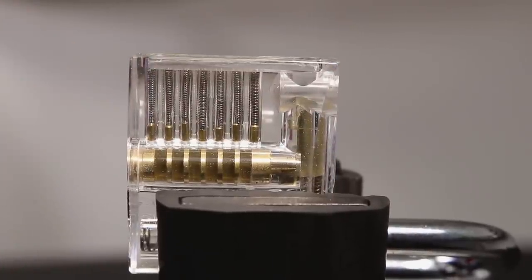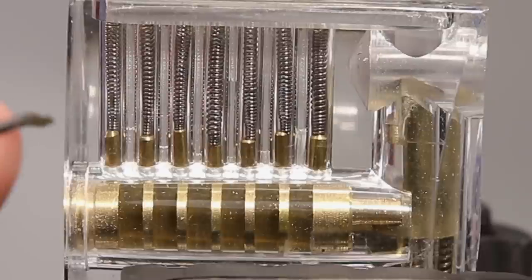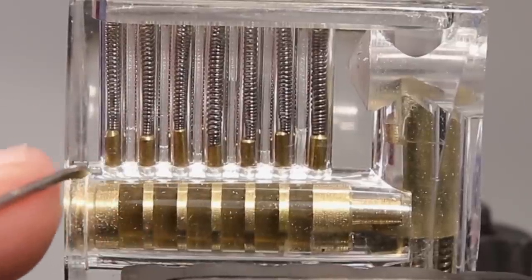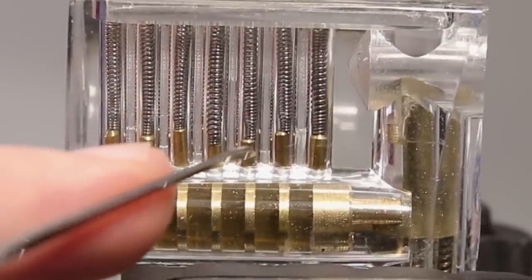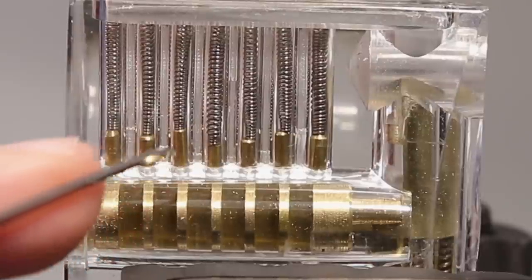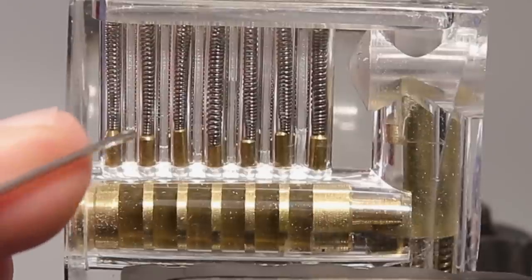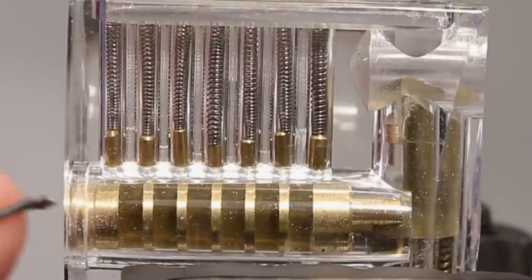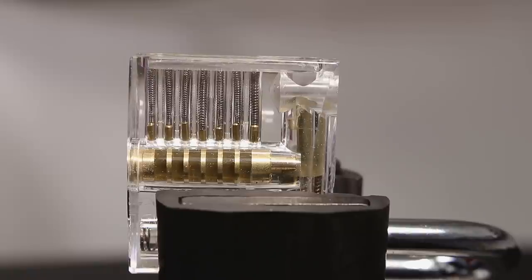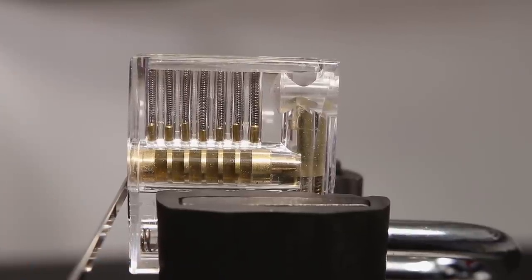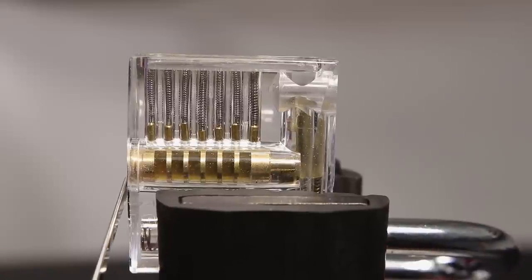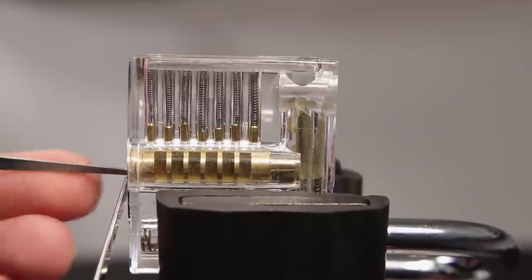So when we are trying to pick a lock, what we're doing is we're taking advantage of manufacturing tolerances. So each hole in the plug here has a different tolerance. They're not all perfectly in the same spot. They're not all perfectly the same size. And because of this, this creates a phenomenon where we can get a binding pin. So when you take your tension wrench like this, and you insert it into the plug here, and you start to put some tension on the lock, what you're going to do is lift up on each key pin.